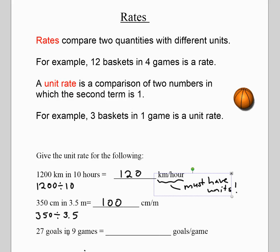Notice unit rates must have units. It isn't a rate unless it has the units. So that's really important that you include the units when you're doing unit rate. 350 centimeters in 3.5 meters, to get a unit rate you just divide, and you'll get 100 centimeters in one meter. 27 goals in nine games, you just divide, that will be three goals in one game.